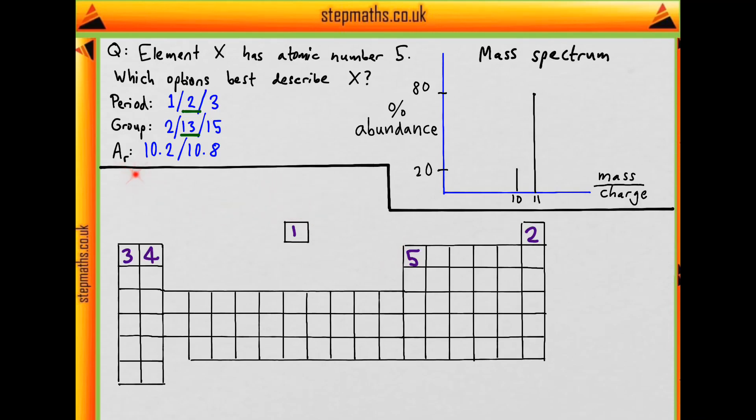Finally, what about the relative atomic mass? Is it 10.2 or 10.8? We shouldn't need to look at this diagram in too much detail. What's meant by relative atomic mass? It's the average weighted mass of all the isotopes.